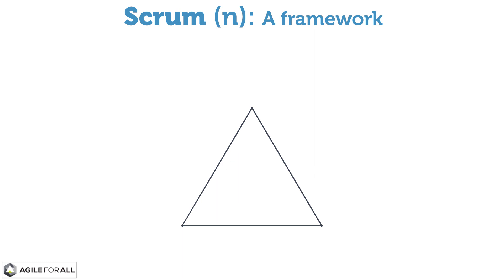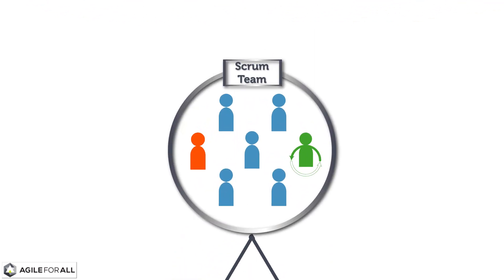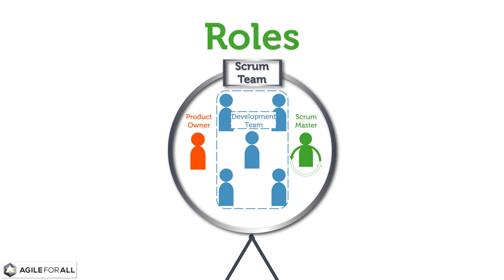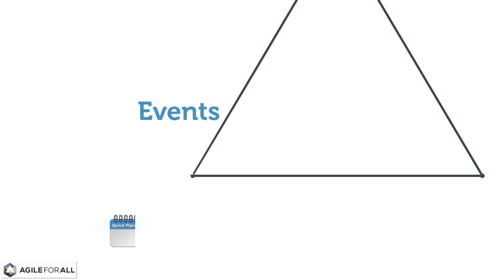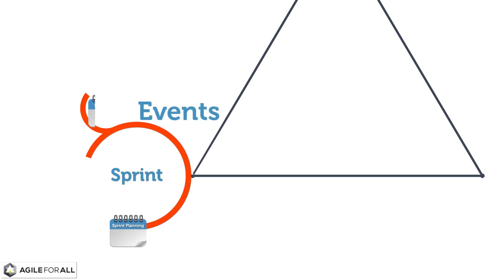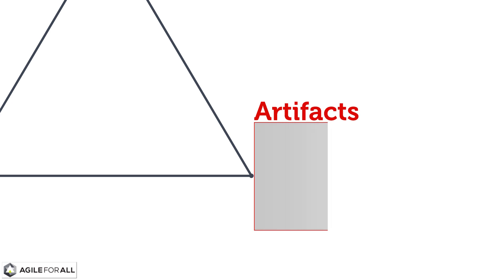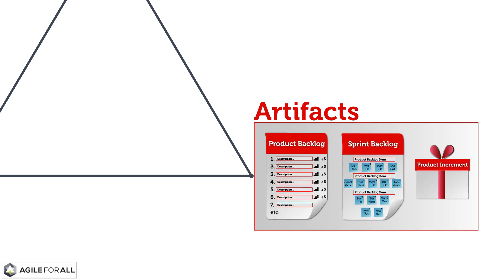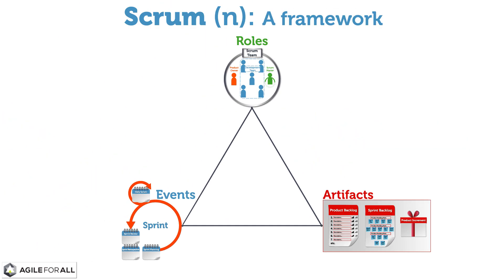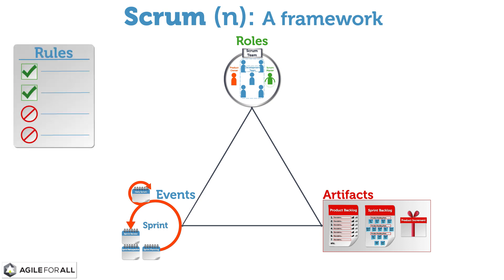The Scrum framework consists of Scrum teams and their associated roles, events, and artifacts. Each of these core components has a few simple rules, and there are simple rules describing the relationship and interaction between the components. Anything not described by those components and rules is not part of the framework.